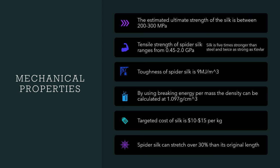Mechanical Properties: The estimated ultimate strength of the silk is between 200 and 300 MPa. The tensile strength of spider silk ranges from 0.45 to 2 GPa. Silk is five times stronger than steel and twice as strong as Kevlar when tested at the same weight. The toughness of spider silk is measured at 9 MJ per m³. By using breaking energy per mass, the density can be calculated at 1.097 g per cm³. The targeted cost of silk is $10 to $15 per kg, and spider silk can be stretched over 30% of its original length.